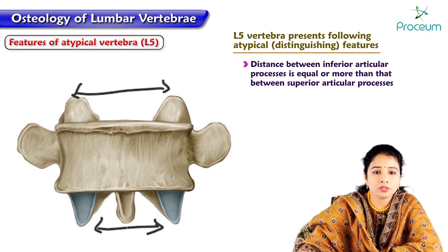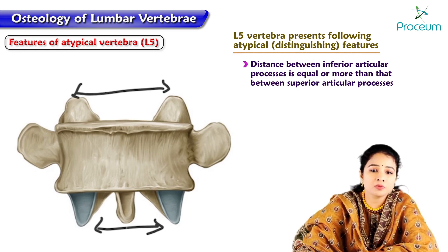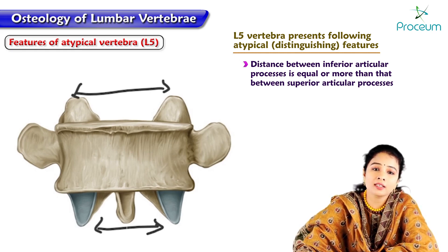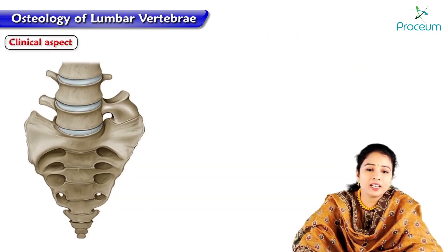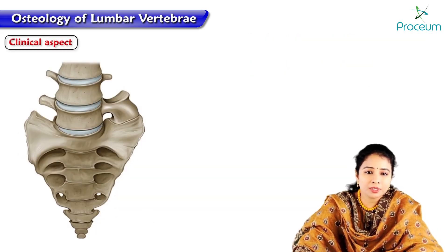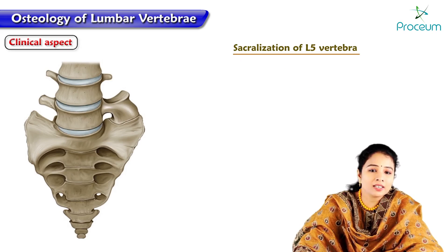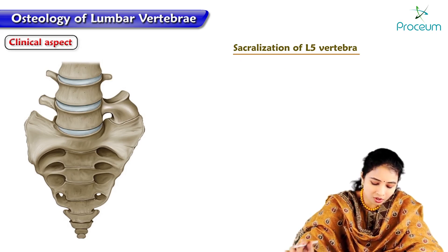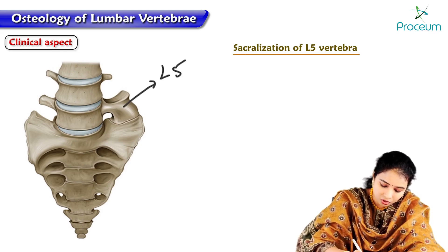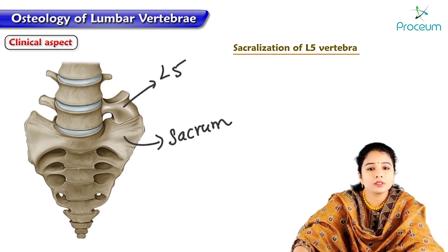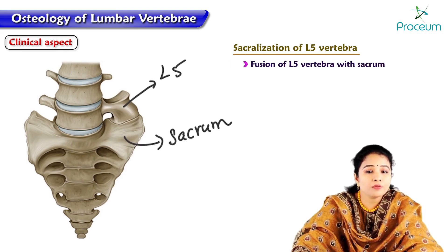These are the important features that differentiate L5 as an atypical lumbar vertebra. Regarding clinical aspects: the first is sacralization of the fifth lumbar vertebra, where we can see L5 joining with the sacrum — it is the fusion of the fifth lumbar vertebra with the sacrum.